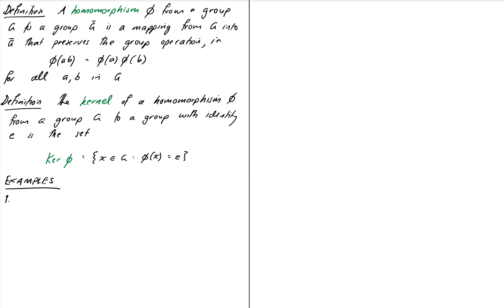First off, every isomorphism preserves a group operation, so all isomorphisms are also homomorphisms. Example number one: an isomorphism is a homomorphism.